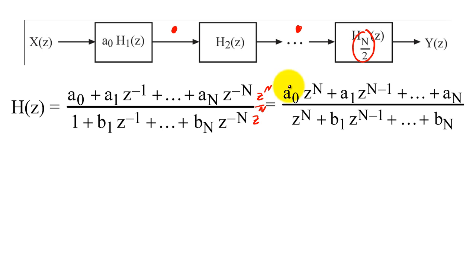We then factor a sub-zero out of the numerator so that all zeros will have the form z minus c sub i.